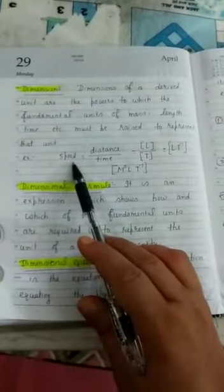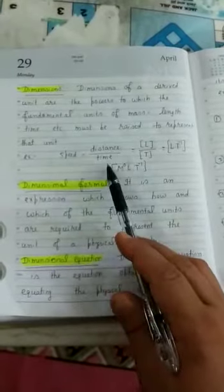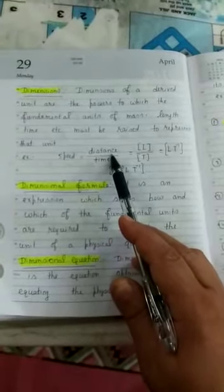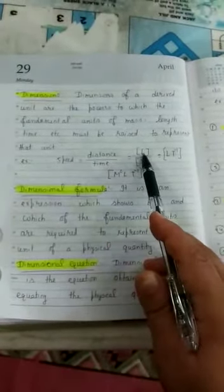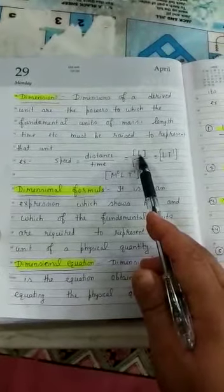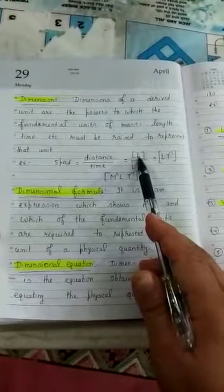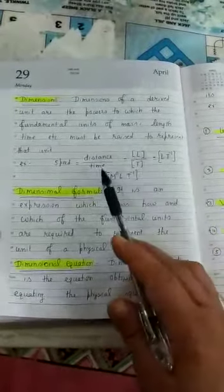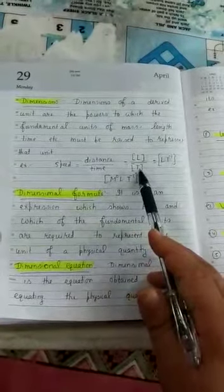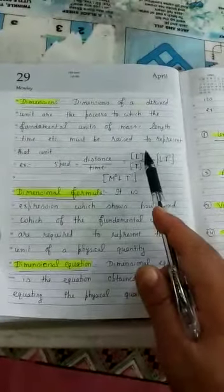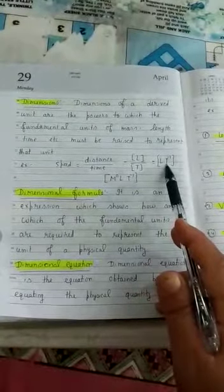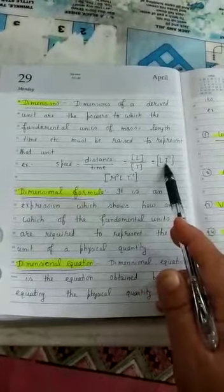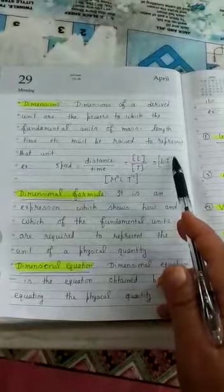For example, speed equals distance upon time. For distance we will use L, because we have three options: mass means M, length means L, time means T. So distance means L, time means T. Power is 1. When we take this term up, it becomes negative. So its dimensions can be written as LT^-1.